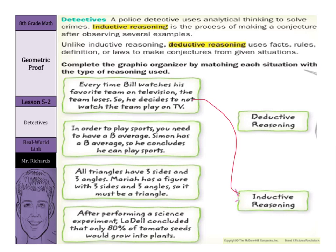In order to play sports, you need to have a B average. Simon has a B average, so he concludes he can play sports. That's using a law, or a rule, or a fact, and that would be deductive reasoning.